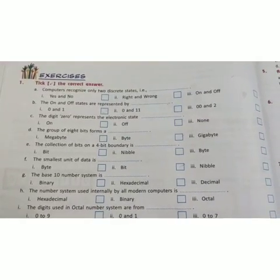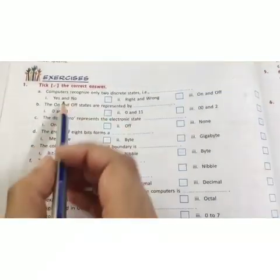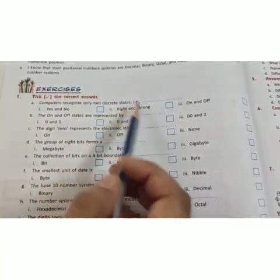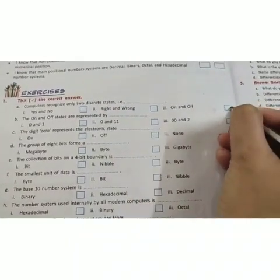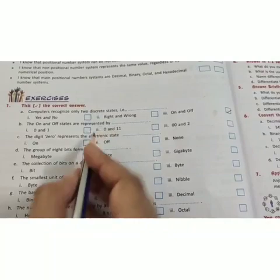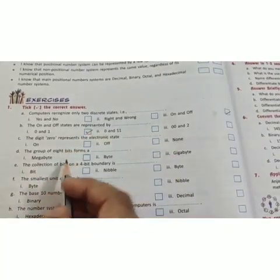Open page number 28, first question. Computer recognizes only two discrete states that is on and off. The on and off state are represented by 0 and 1.